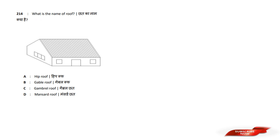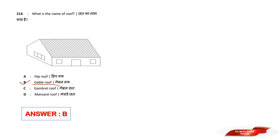What is the name of this roof? Options are: A) Hip, B) Gable, C) Gravel, D) Mansard roof. Answer option B is Gable roof. A Gable roof is identified by its shape. Answer option B.